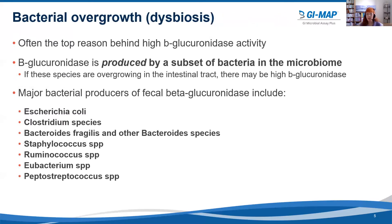First, we have bacterial overgrowth or dysbiosis. This is often the top reason behind high beta-glucuronidase activity. Beta-glucuronidase is produced by a subset of bacteria in the microbiome, so if these species are overgrowing in the intestinal tract, there may be high beta-glucuronidase. Major bacterial producers of fecal beta-glucuronidase include Escherichia coli (E. coli), Clostridium species, Bacteroides fragilis and other Bacteroides species, Staphylococcus species, Ruminococcus species, Eubacterium species, and Peptostreptococcus species.